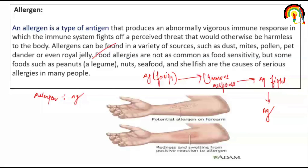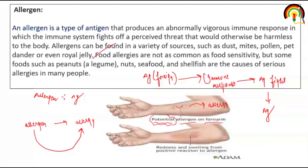For example, here we see potential allergen tested on four arms. Allergen means joh allergy cause karvata hai. Do terms hain — ek hai allergen, aur ek hai allergy. Allergen voh hoga jo allergy cause karvayega. Yahan per is allergen ki paas mein capability hai allergy cause karvaane ki on four arms. Is allergen ki vajah se yahan allergic response dekhne ko mila hai — redness and swelling from positive reaction to allergen.